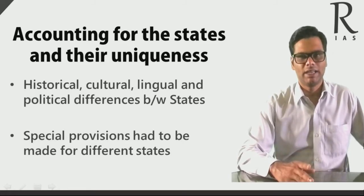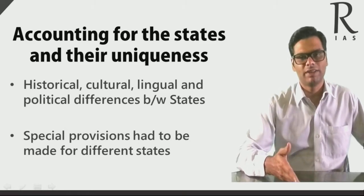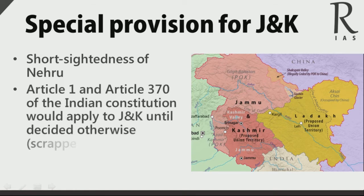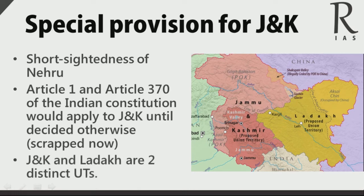If you look at Article 371 through to the alphabets, you will see that over 12 states have special provisions in the constitution because of the nature of the population of the states. The first special provision we look at is for Jammu and Kashmir. Only the state of Jammu and Kashmir was allowed to make its own constitution. Jammu and Kashmir was given a special status and a great majority of the provisions of the Indian constitution would not apply to it. Article 1 and Article 370 of the Indian constitution applied to Jammu and Kashmir. Please remember that Article 370 was scrapped in August of 2019.